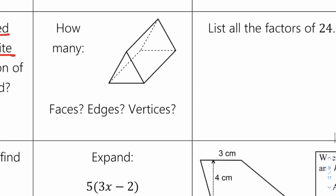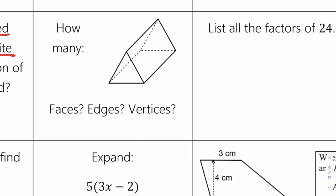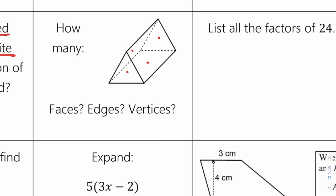How many faces, edges, and vertices? The faces — counting them — there are 5 faces. Edges are these lines: counting gives 9 edges. It's always good to highlight them if you have a highlighter. Vertices are the corners: counting gives 6 vertices.